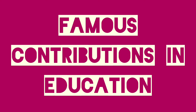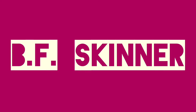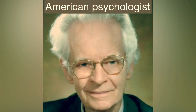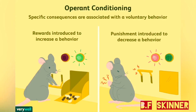Let's start off with Boris Frederick Skinner, also known as B.F. Skinner. He's an American psychologist and behaviorist who developed the theory of operant conditioning — the idea that behavior is determined by its consequences, be they reinforcements or punishments, which make it more or less likely that the behavior will occur again.